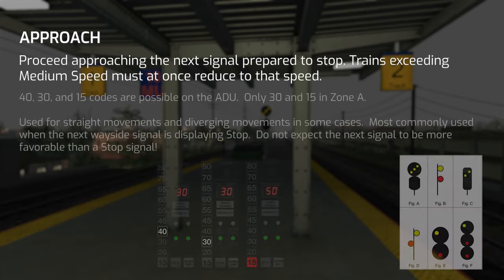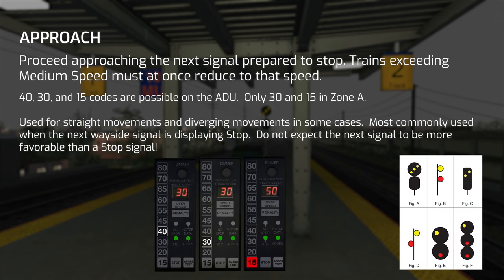Approach means to proceed approaching the next signal prepared to stop. Trains exceeding medium speed must at once reduce to that speed. Approach typically precedes a stop signal, but that isn't always the case. The possible ADU codes when passing Approach are 40, 30, and 15. Approach 15 is used when the next signal is stop or restricting with no track circuit in between. Approach 30 is common in Zone A but also used when switching tracks at a 30 mph crossover. Approach 40 is the most commonly encountered variant. In areas with many one-head block signals — such as Woodside to Kew Gardens — Approach 40 will be used in circumstances that would normally display Approach Medium, since that requires two heads.